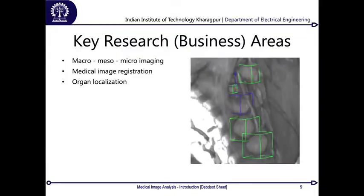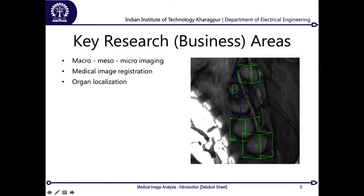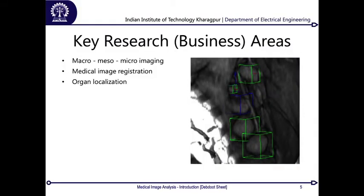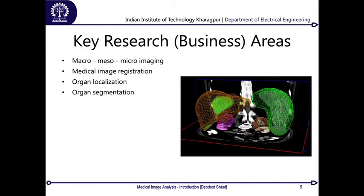Another interesting area is organ localization — finding organs in whole-body images. Algorithms make life much easier for clinicians who would otherwise have to search through large volume spaces. Although imaging is done in 3D, clinicians view it on 2D screens or X-ray films and mentally reconstruct the 3D space. Algorithms that can find and localize organs in 3D, then segment them out, make this process far more efficient.